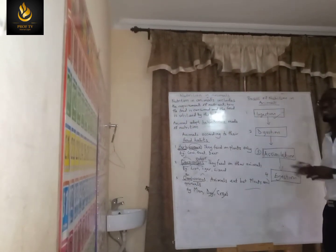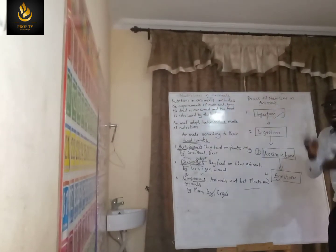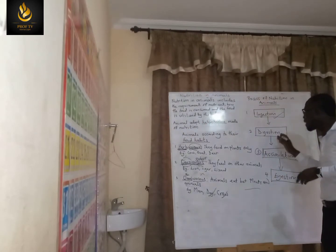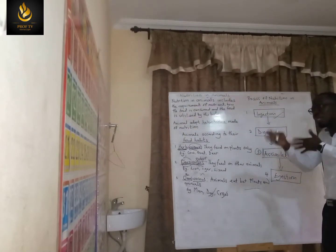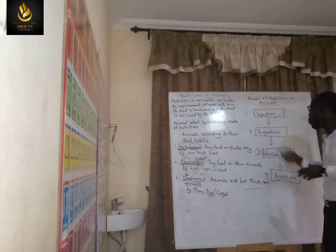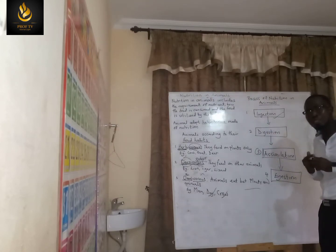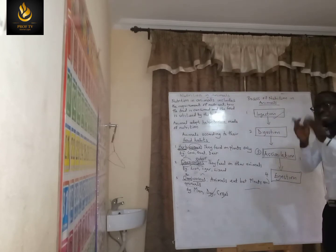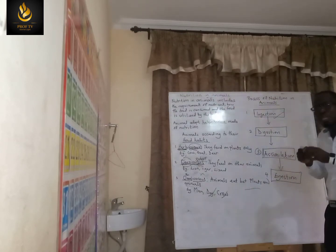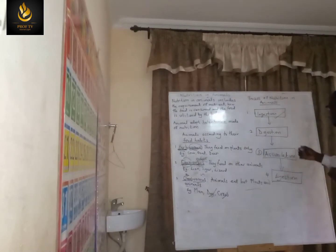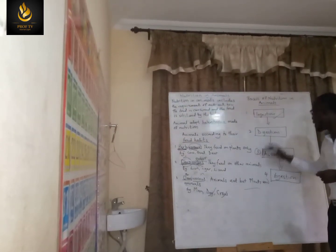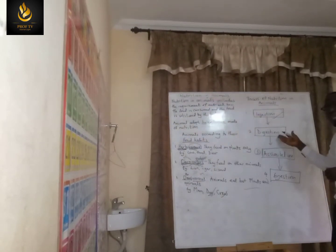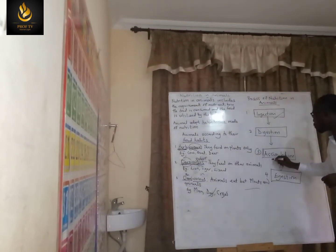The second process is digestion — the process of breaking down the food. We will look at digestion in more detail in our next lessons. Digestion involves breaking down complex food into simpler substances, so that energy can be obtained.